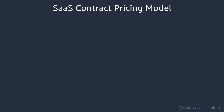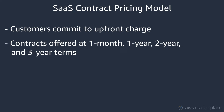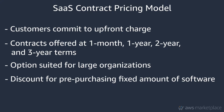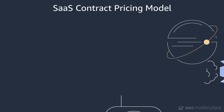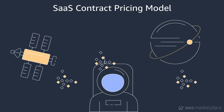Now, let's take a moment to go over the SaaS contract pricing model. With this option, customers commit to an upfront charge for their expected usage. Contracts can be offered at a one-month, one-year, two-year, or three-year term. SaaS contracts are a great option when you are selling to larger organizations who want to lock in a discount by pre-purchasing a fixed amount of software over a set period of time. In order to retrieve information about the customer's contract and what it entitles them to, you will use the AWS Marketplace Entitlement Service.